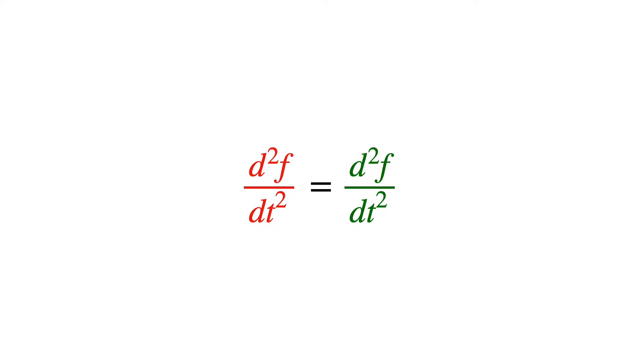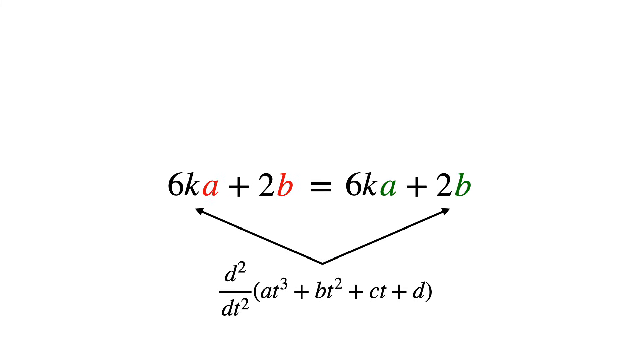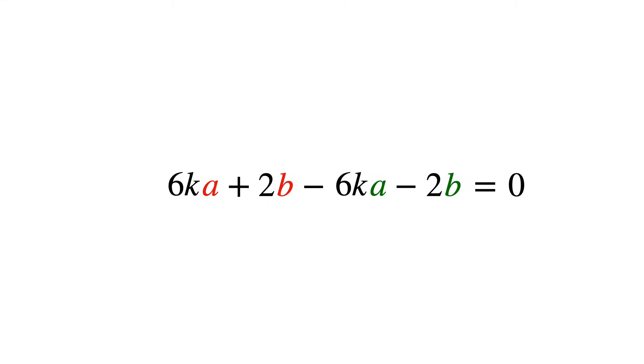So let's introduce one more. Let's make the second derivatives equal at the knot. Here's the equation for the second derivative, which we rewrite this way, and it gives us our sixth constraint.